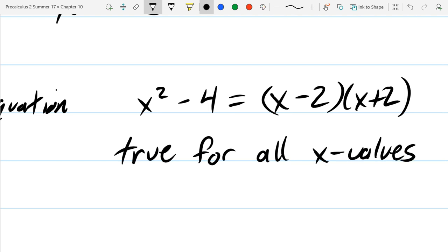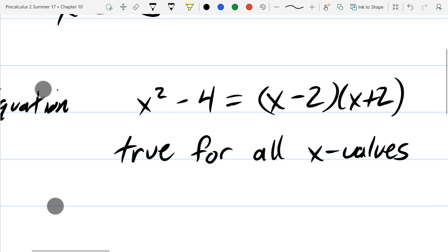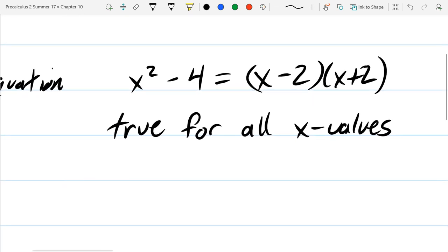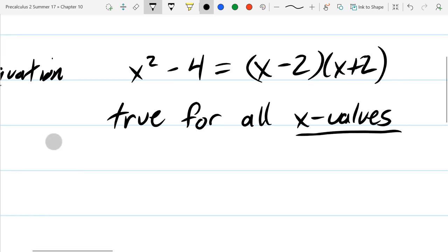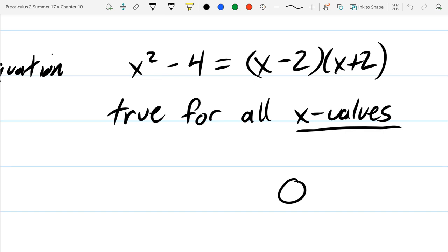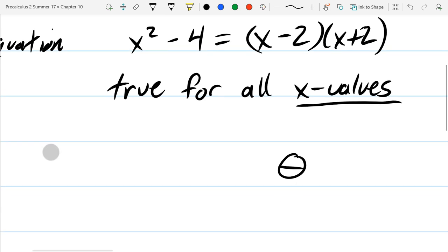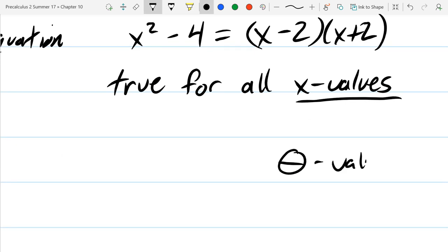What separates identity equations from regular equations is they're true for all variable values. Here our variable is x. Many equations we're going to have theta as our variable, and plenty of other times we'll use other variables.